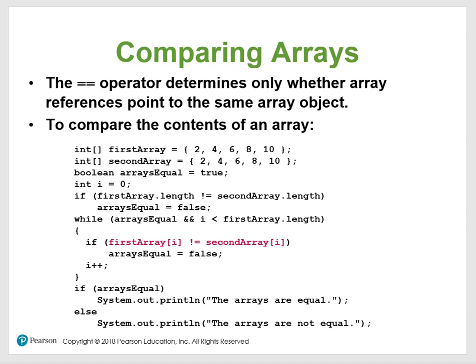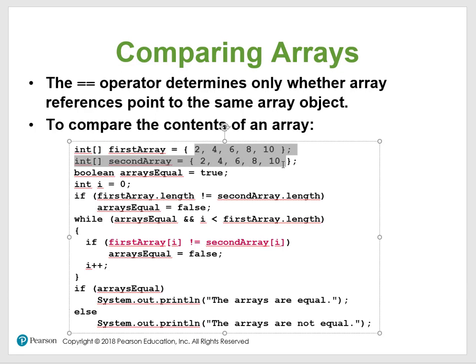Now, comparing arrays. This is a really good one to look at. Remember that the == operator determines whether the array references point to the same array object, not whether the contents are equal. So when you compare these two arrays, you have a boolean called arrayEqual set to true. Then i is declared as zero.